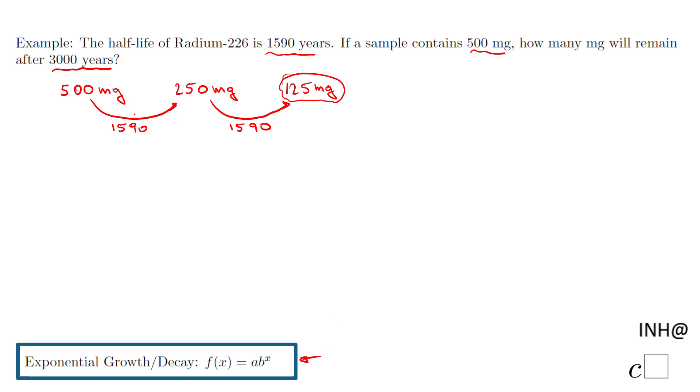In this one I can use something like this: let's say the amount of radium equals A sub zero, this is the initial amount, and then b to the power of t. Let's use t instead of x, which means time in years.